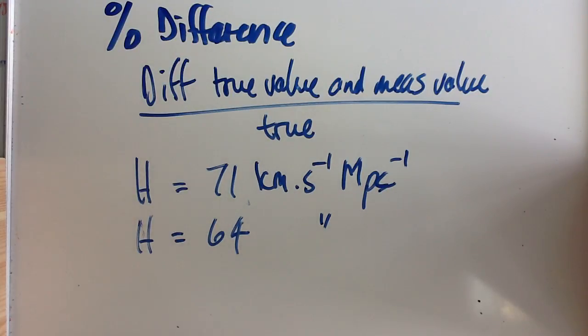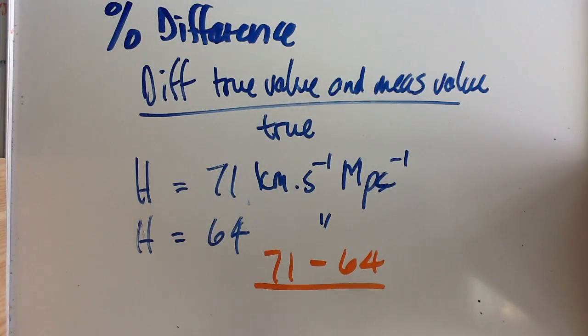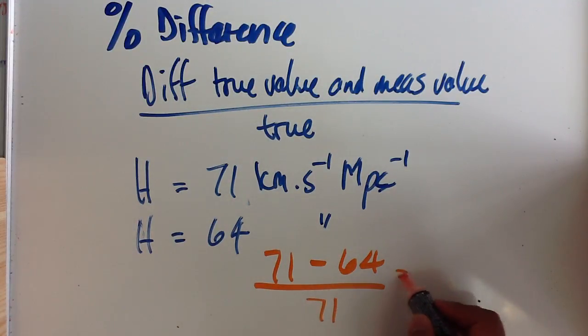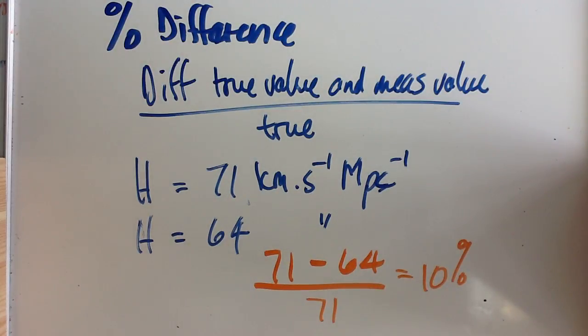How you would calculate the percentage difference is to take the difference between the two. So 71 minus 64 divided by your true value or the value that you've been given or the constant that you've been given, which is 71. And your percentage difference in this case is therefore 10%.